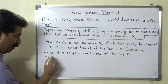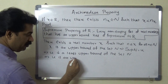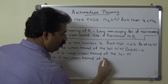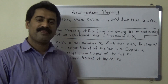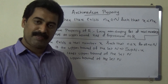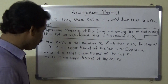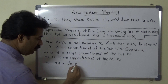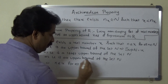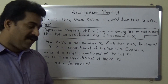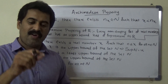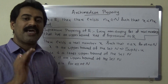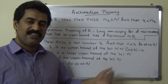Since u is an upper bound of the set capital N, by the definition of an upper bound we can write n ≤ u for all n belonging to capital N. That means every element in capital N is less than or equal to small u.